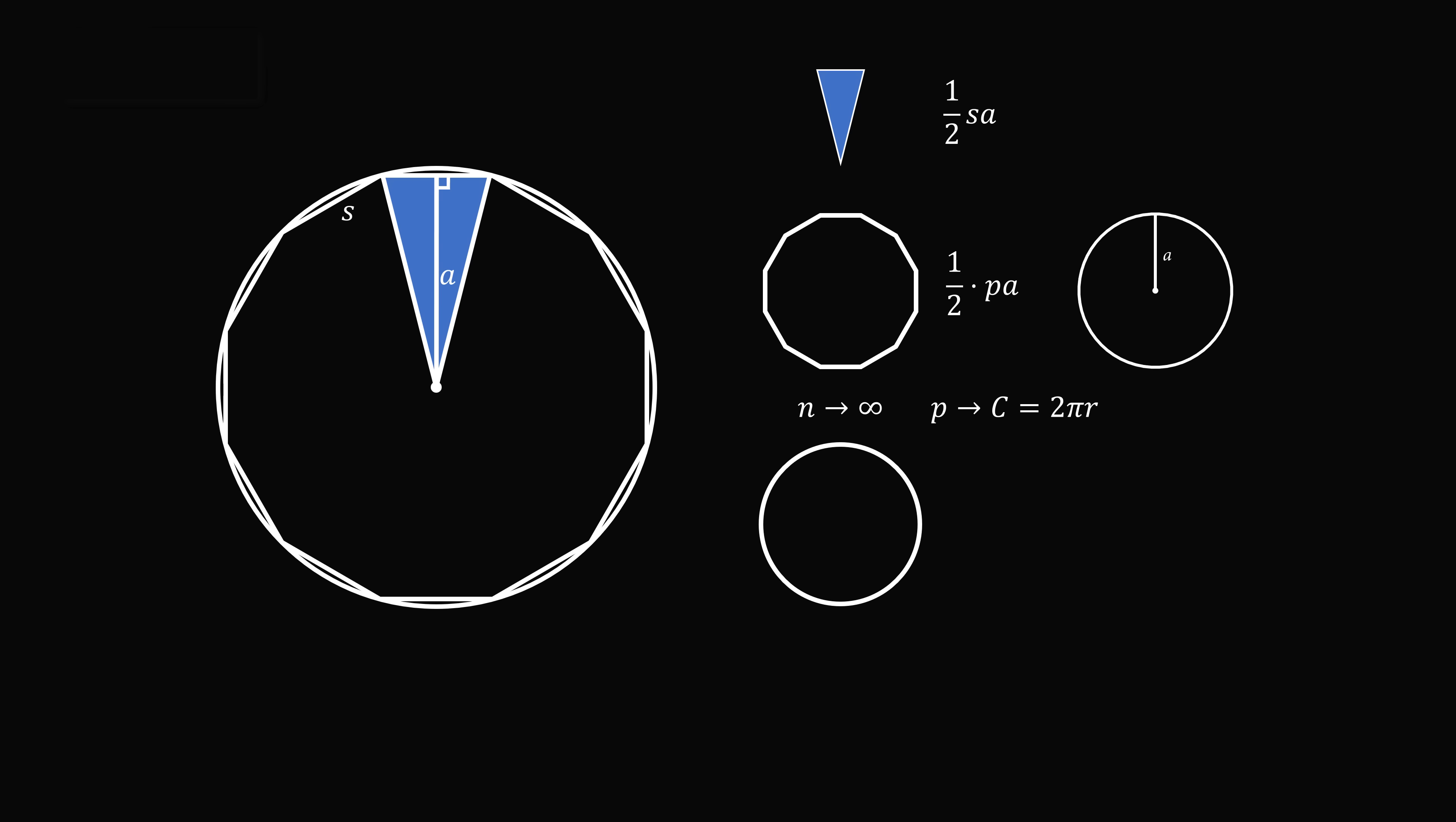Furthermore, the length of this apothem will get closer and closer, and eventually reach the value of the radius. So a is going to go to r.